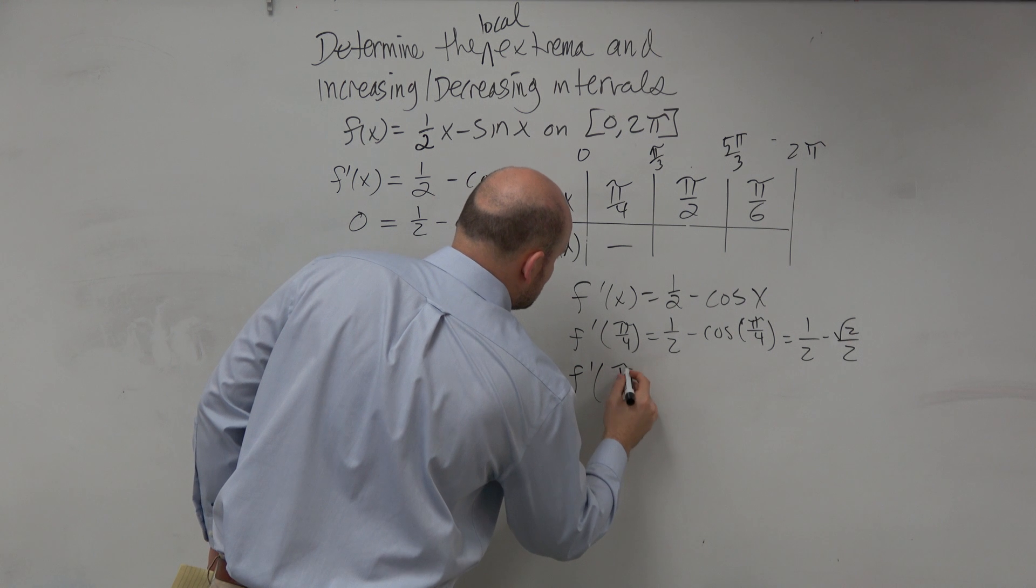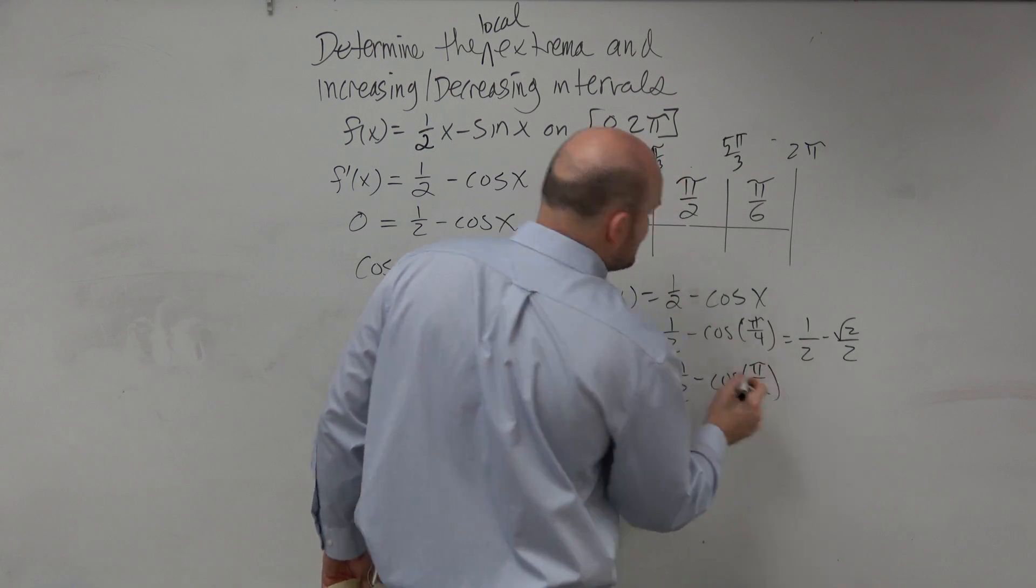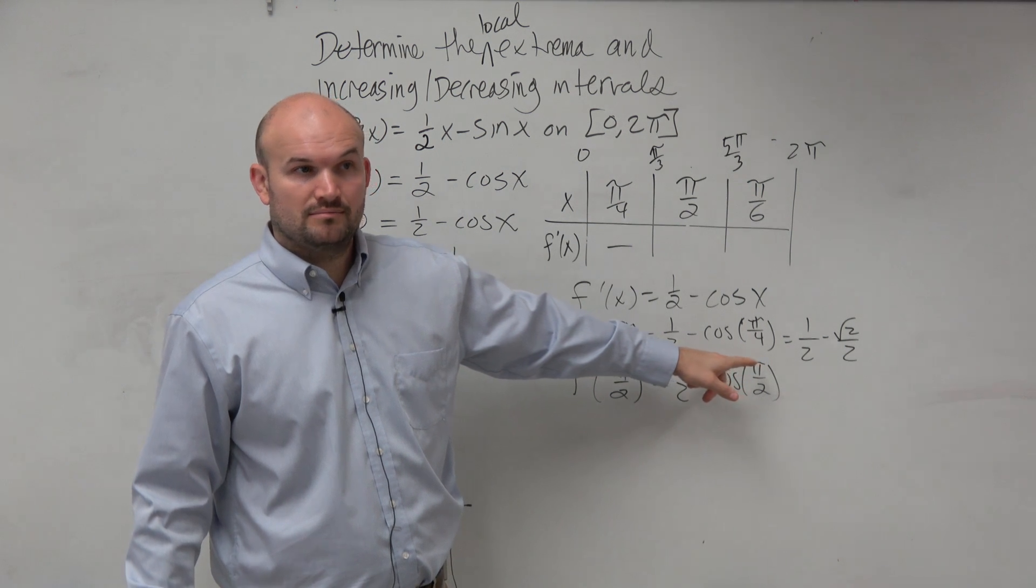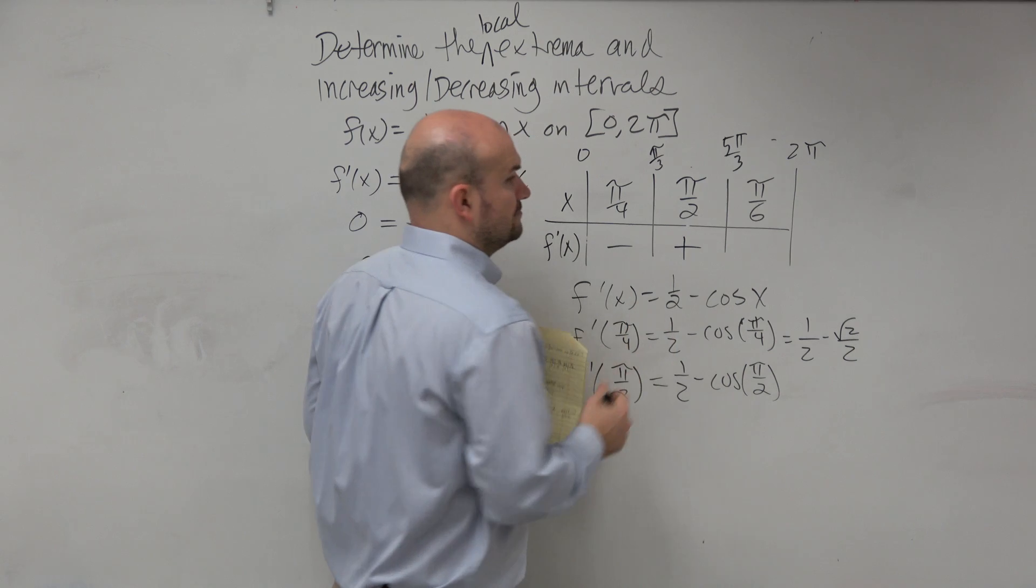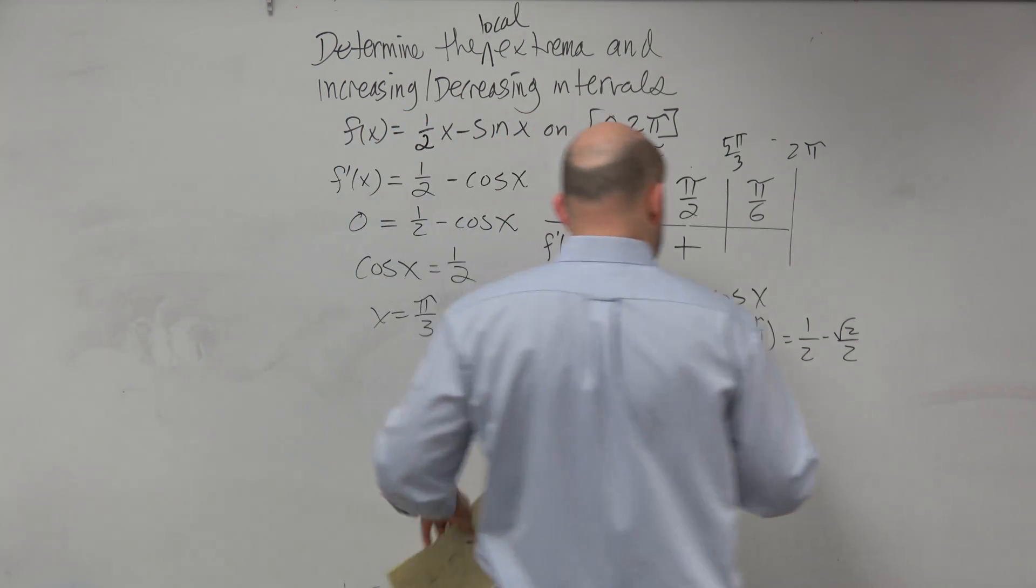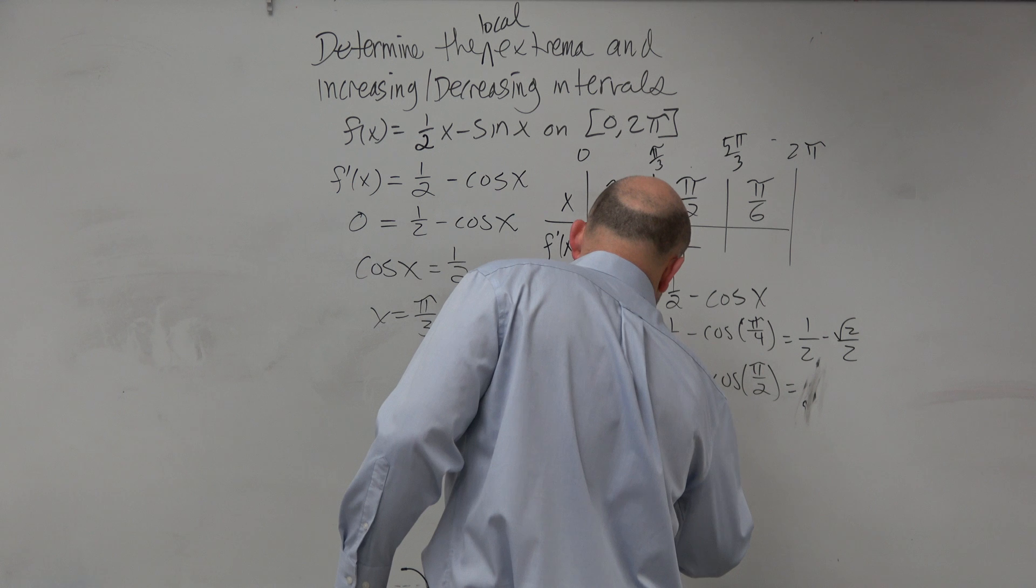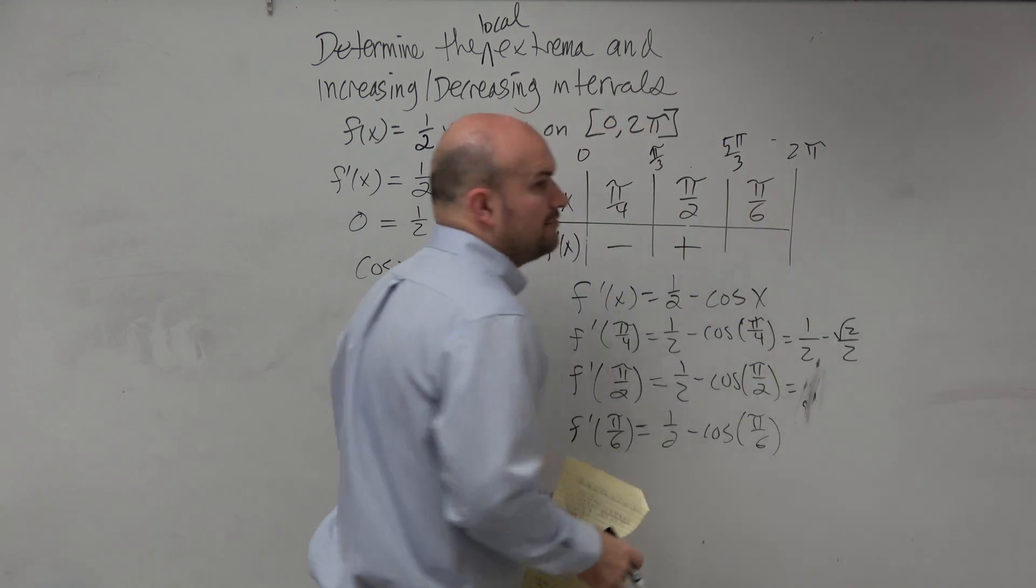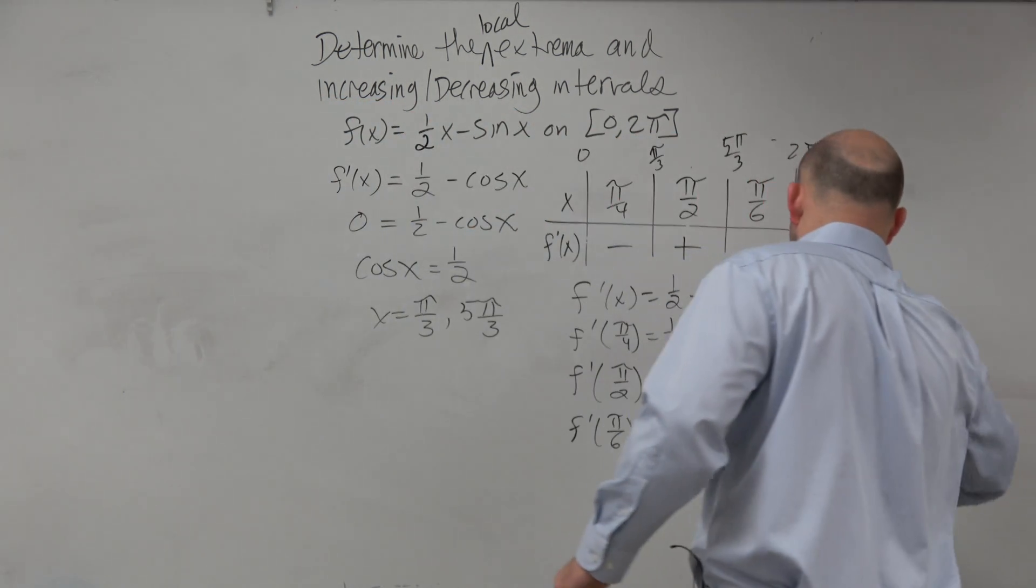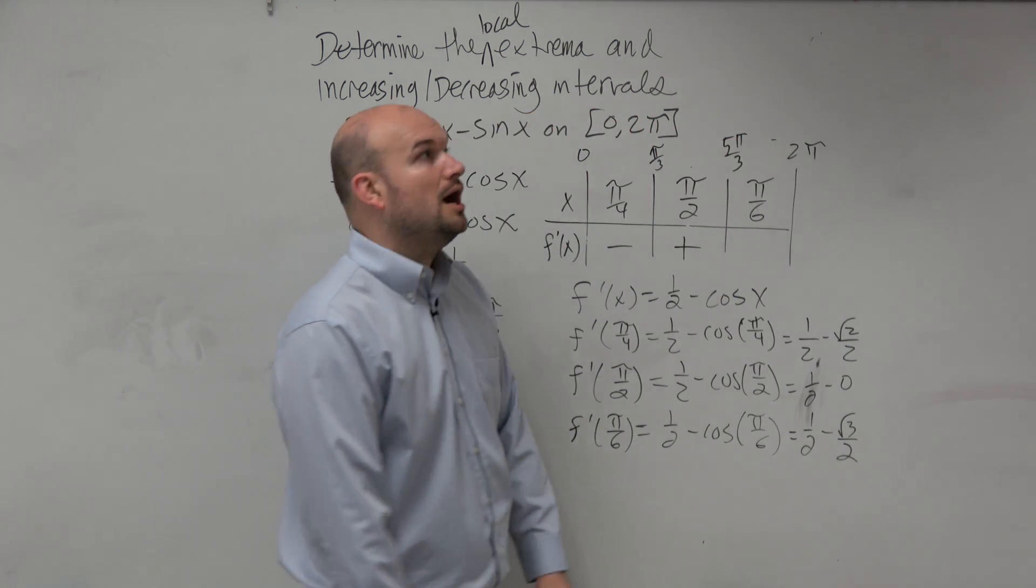So let's do f prime of π/2. π/2, that's the same thing as 90 degrees. So the cosine would be 0. So you have 1/2 minus 0, which is going to be positive. And then we do π over 6. If you guys looked at π over 6, that's the square root of 3 over 2. And then if we did f prime of π over 6, that would equal 1/2 minus the cosine of π over 6, based on the unit circle that I wrote up there. So really what you have is 1/2 minus √3 over 2. Is the square root of 3 larger than 1 or smaller than 1? Larger. So there we go with a negative.